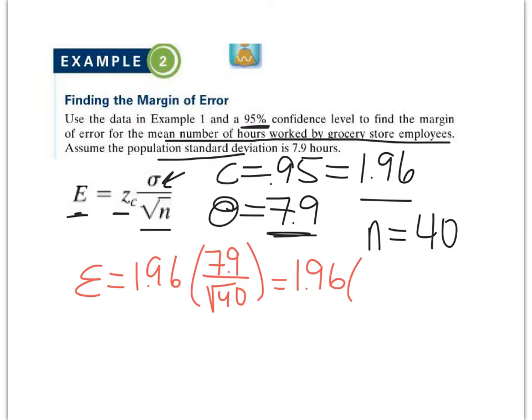7.9 divided by — and I'm going to use parentheses to put the square root of 40 together — and I get approximately 1.249. Leaving that in the calculator, I'll multiply it now times 1.96, and I get a margin of error equal to 2.45, rounding to the hundredths.